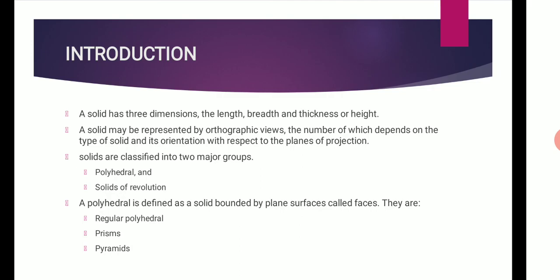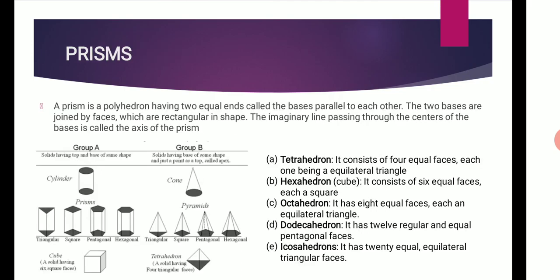To understand and remember various solids in this subject properly, those are classified and arranged into two major groups, nothing but Group A and Group B. Group A is nothing but having the top and base of same shape. But in case of Group B, the solids have base of some shape and just a point at the top called an apex.